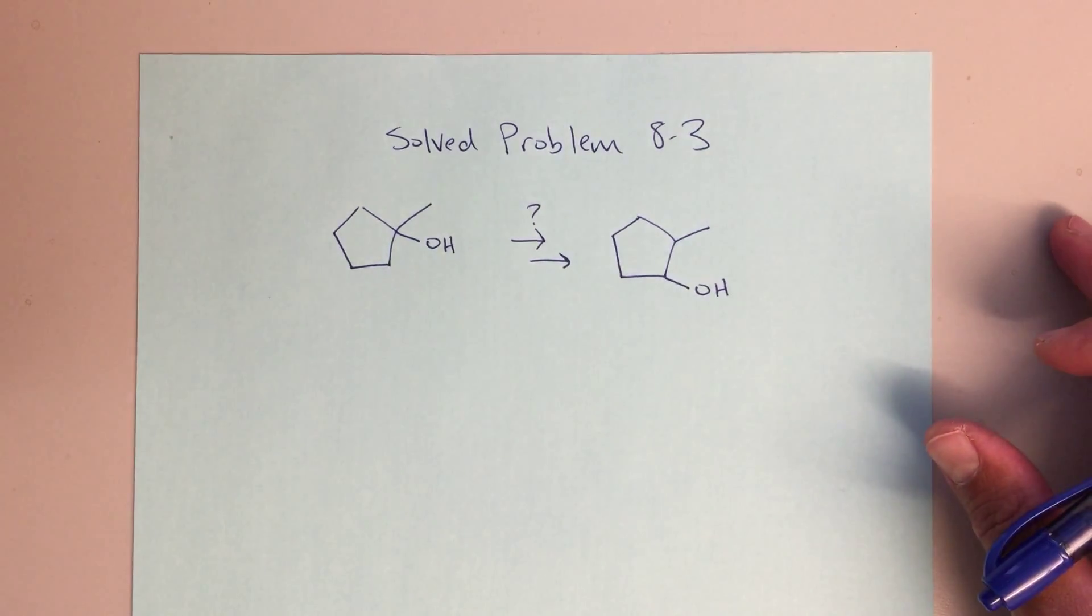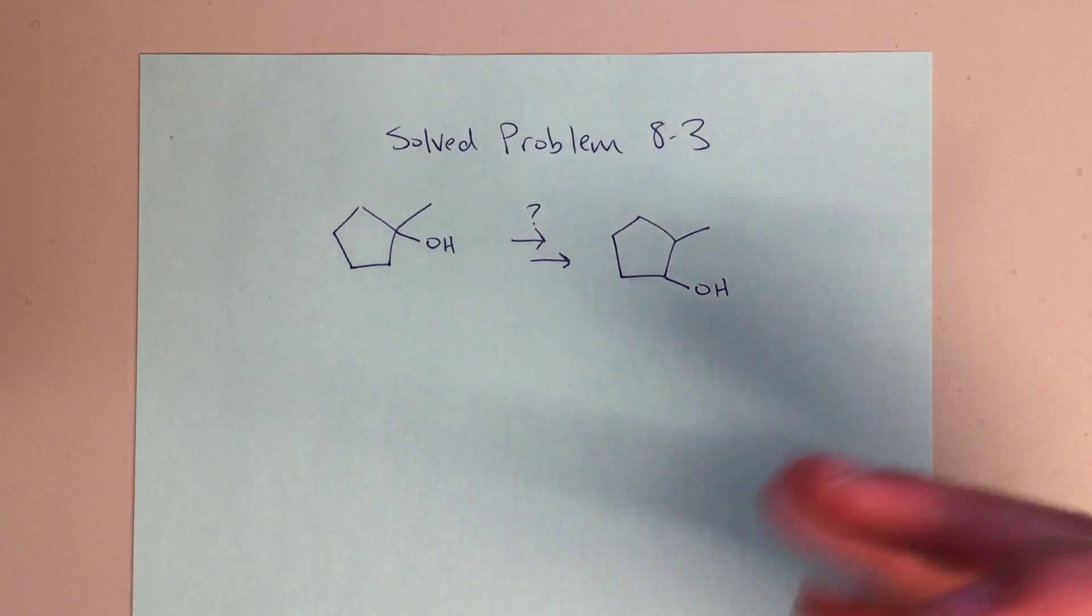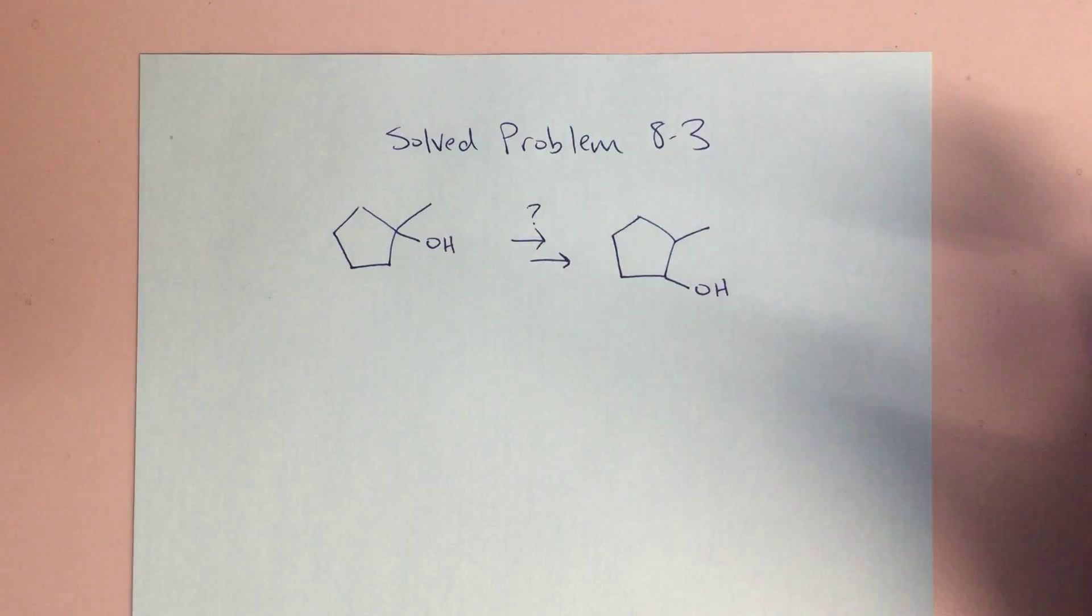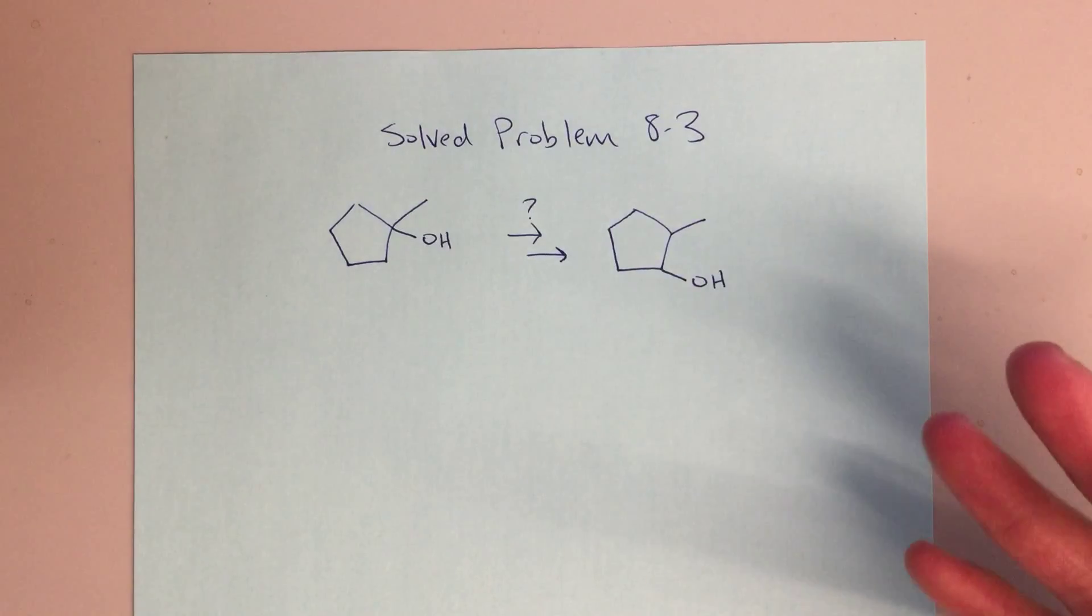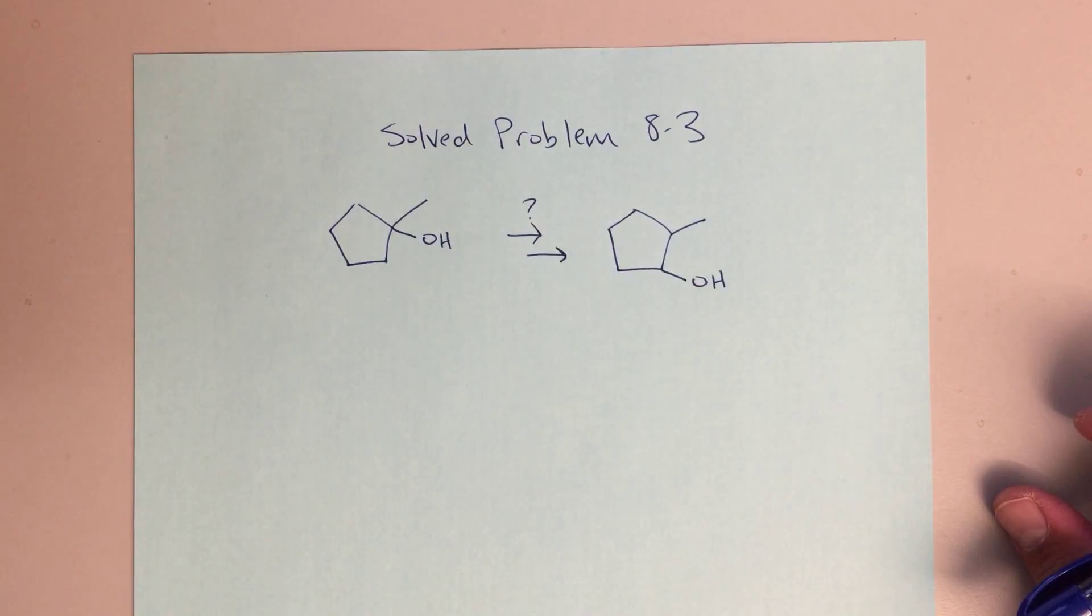These types of problems on how to go from one starting material to a certain product are really at the core of this organic chemistry class, an important skill that you need to work on and develop. Personally, I found this to be the most difficult type of problem when I was a student, so I'm trying to help you out in terms of how to get started and the different strategies that you can utilize.